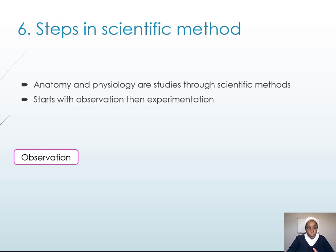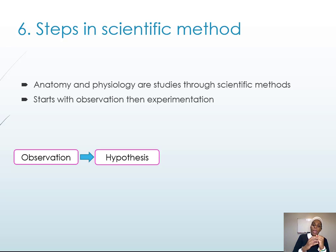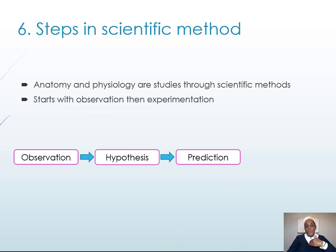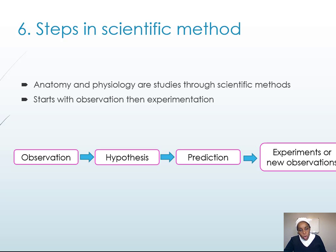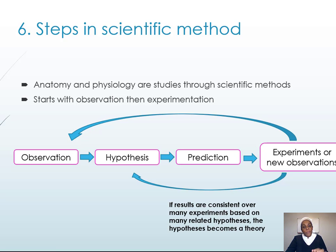What are the steps? First, you make an observation. Then you formulate a hypothesis — for example, if the egg is in a very concentrated solution, water will move out and the egg will shrink; if the solution is less concentrated, water will move in and the egg will get bigger. That's the hypothesis. But you cannot confirm it until you run an experiment or make a new observation. Then you make additional hypotheses. If results are consistent over many experiments based on many related hypotheses, the hypothesis becomes a theory.